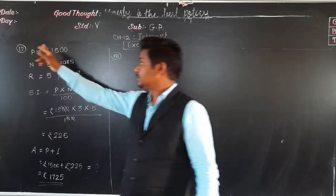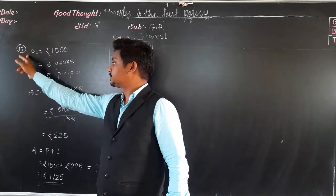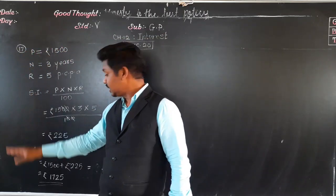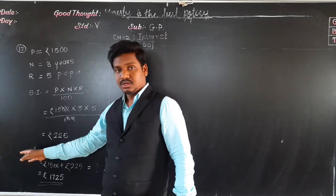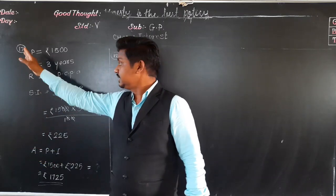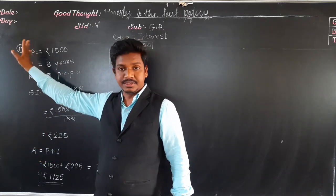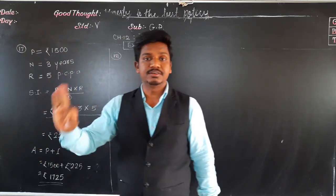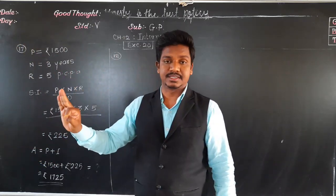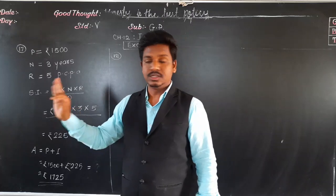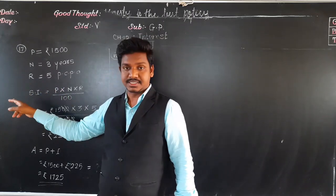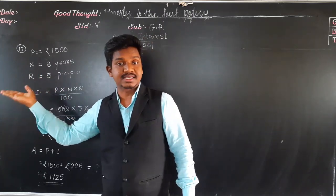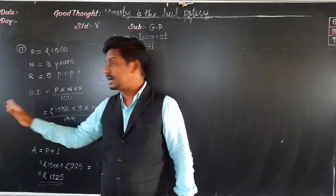Out of the four concepts — P, N, R, and SI or amount — any three will be given and one we have to find. We don't always have to find simple interest. Sometimes simple interest can be given and we find one of the other three.